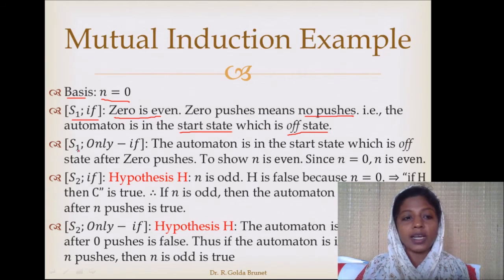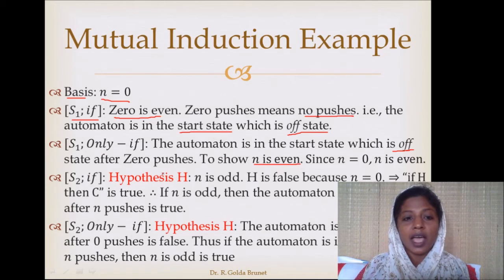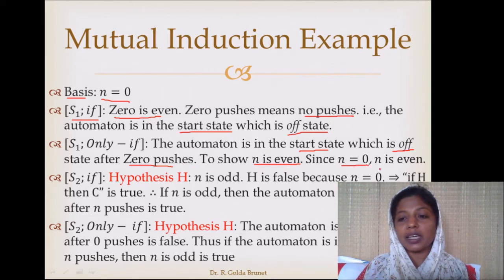The only-if part of S1: the machine is in the off state after n pushes and we have to show that n is even. With 0 pushes we are indeed in the start state, which is the off state. And when there is no push, n is equal to 0, which means n is even because 0 is even.